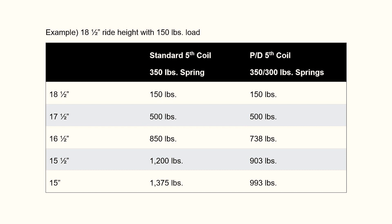On the other example, we're showing the PD fifth coil. It's the same preload at ride height. So the first inch of travel, you have exactly the same spring rate — it's still 500 pounds. But then as you see on the chart, the second inch drops off to 738. Third inch of travel drops off to 903. And the three and a half inch is now 993. So basically the difference is 382 pounds. It's a lot more realistic that you're going to achieve that three and a half inches with a PD fifth coil, get your travel, get your suspension up, get your weight transfer, and create more traction off the corner and all the way down the straightaway.